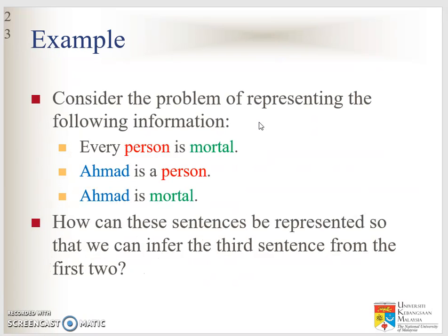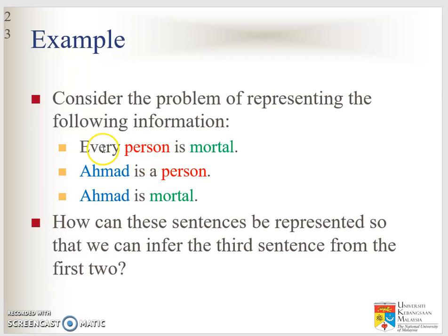An example of sentences in propositional logic: first, every person is mortal; second, Ahmad is a person; third, Ahmad is mortal. Can we conclude that — every person is mortal, Ahmad is a person, therefore Ahmad is mortal? And how can we derive that from the first and second sentence? We can conclude that Ahmad is a person, therefore Ahmad is also mortal.